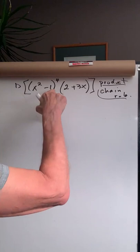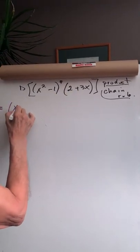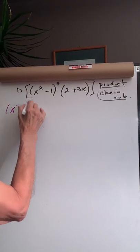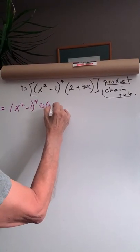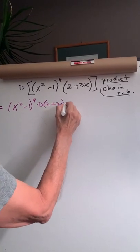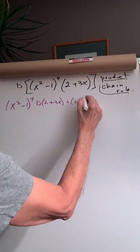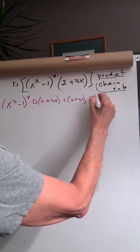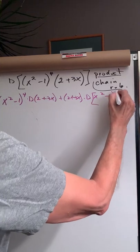So we're going to say, here's the product of these two quantities. So we'll say x squared minus 1 to the 4th times the derivative of 2 plus 3x plus 2 plus 3x times the derivative of x squared minus 1 to the 4th.